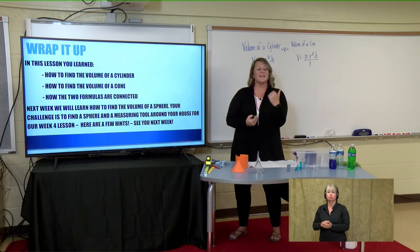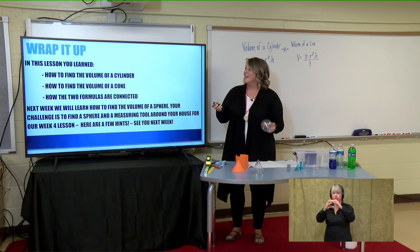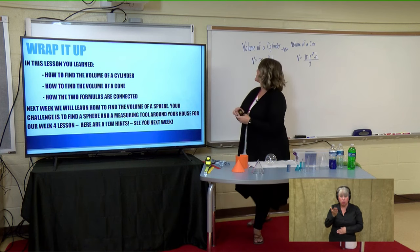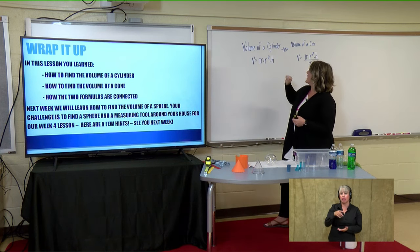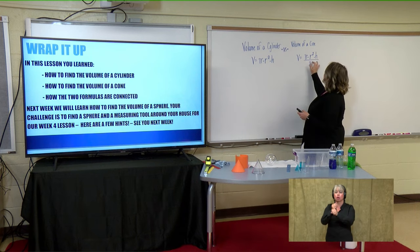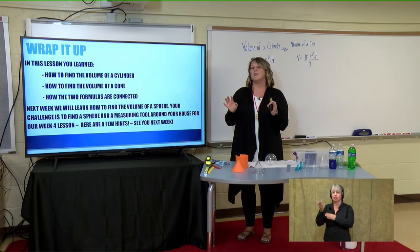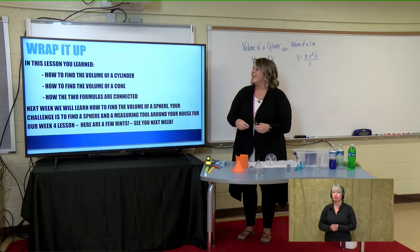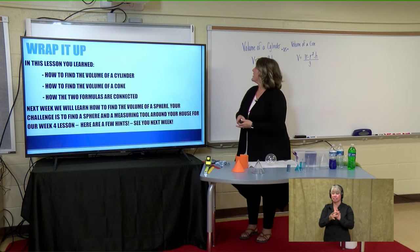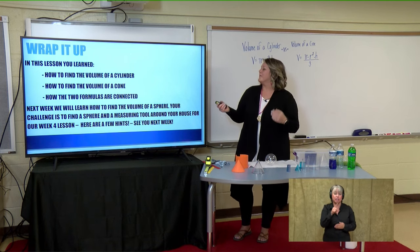We're going to wrap it up here. Next week we're going to be talking about spheres. In today's lesson, we learned how to find the volume of a cylinder — pi times the radius squared times the height — and the volume of a cone — pi times the radius squared times the height, divided by three. Once you remember one, you know the cone is just divided by three, and we showed how the two formulas are connected through our water example.